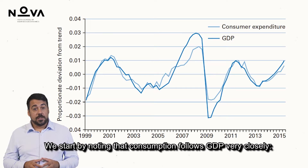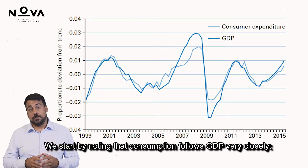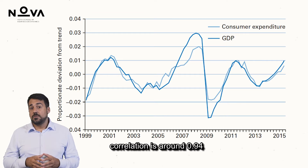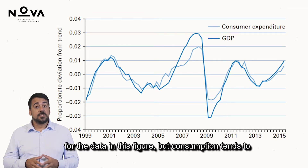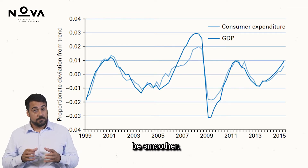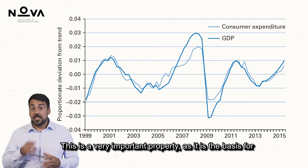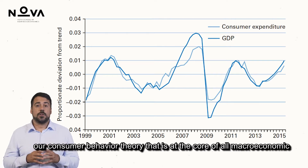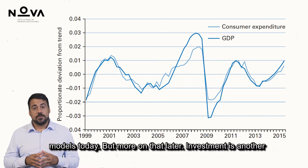We start by noting that consumption follows GDP very closely — the correlation is around 0.94 for the data in this figure. But consumption tends to be smoother. This is a very important property, as it is the basis for our consumer behavior theory that is at the core of all macroeconomic models today.